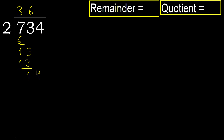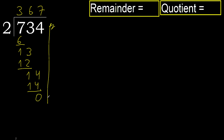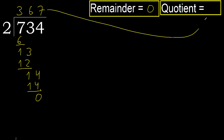Next: 14. 2 multiplied by 7 is 14 — not greater. Subtract: 14 minus 14 is 0. There is no next number, therefore finish. 734 divided by 2 is 367.